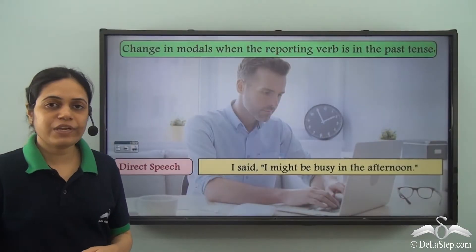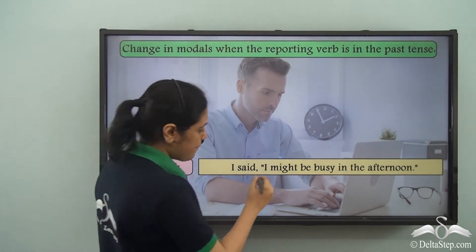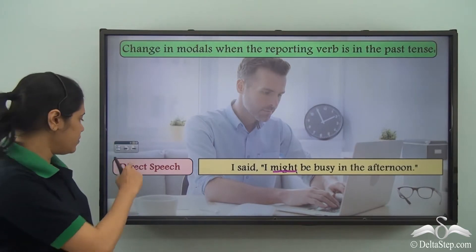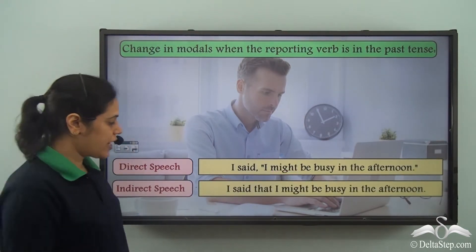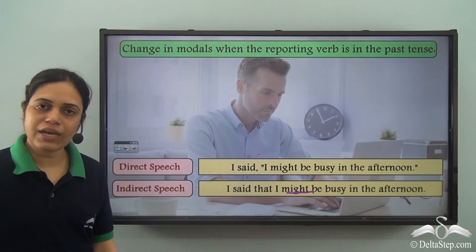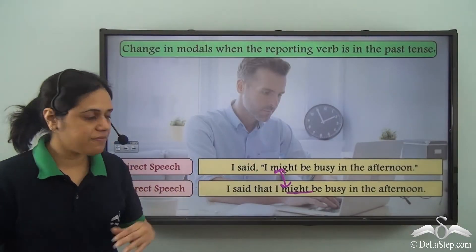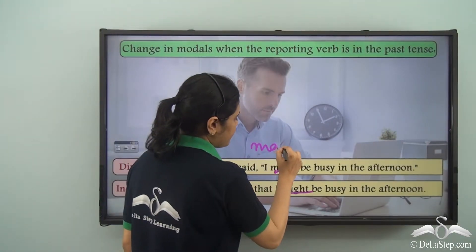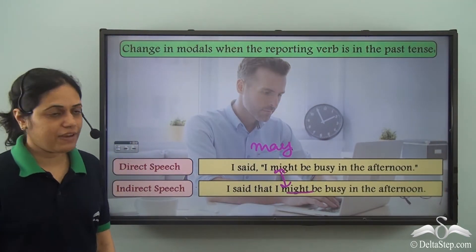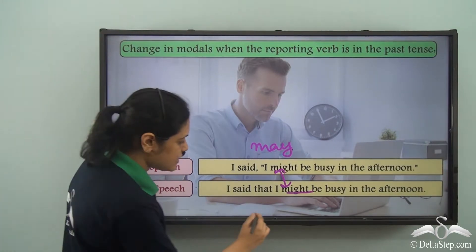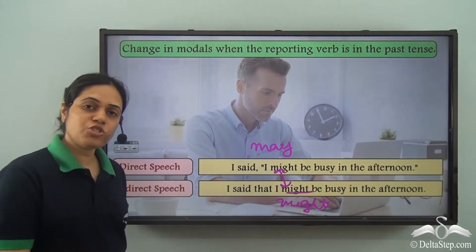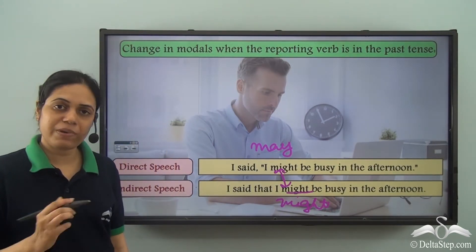'I said I might be busy in the afternoon.' Here 'might' is the modal. In indirect speech: 'I said that I might be busy in the afternoon.' Now if the original used 'may' — 'I may be busy in the afternoon' — the indirect speech sentence still uses 'might'. So 'may' changes to 'might', and 'might' remains 'might'.